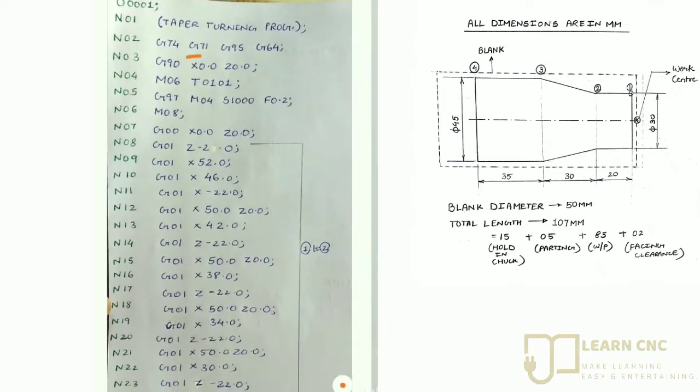Then G71 means metric input, that is mm. And G95 means constant path control mode. G64 means feed in mm per revolution. Then as we know, G90 means absolute coordinate system.